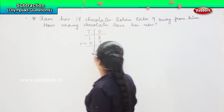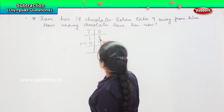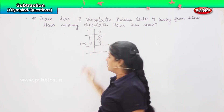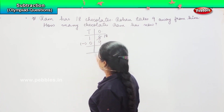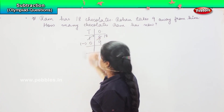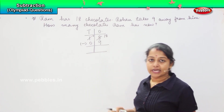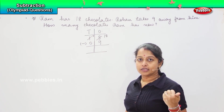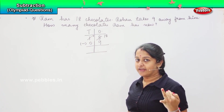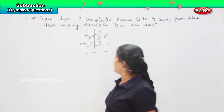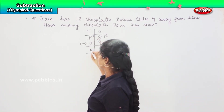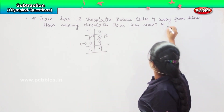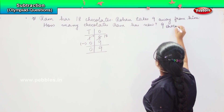So, what is the procedure? As I said, take away. 8 is less than 9, so it is not possible to reduce from 8. So, I will borrow one number. This becomes 18 and this becomes 0. So, 18 minus 9 — counting down: 17, 16, 15, 14, 13, 12, 11, 10, 9. And 0 minus 0 is nothing but 0. Which means that Ram has now 9 chocolates left.